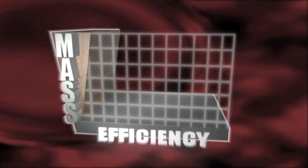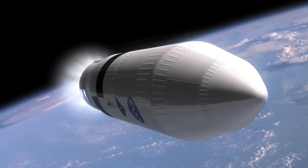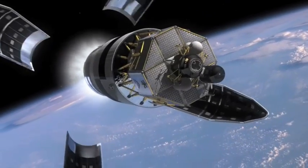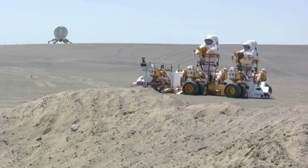Mass efficiency is a measurement of size to productivity. So anything in this quadrant would be ideal. The less mass, the easier it is to get it to the moon. The more efficient, the more NASA can get done in a shorter time.